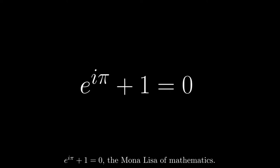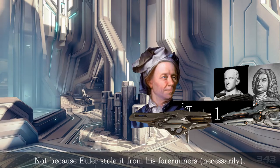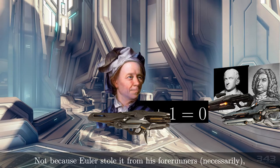E to the I pi plus one equals zero. The Mona Lisa of mathematics. Not because Euler stole it from his forerunners, necessarily.